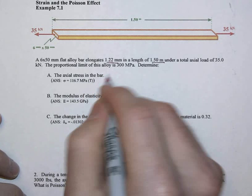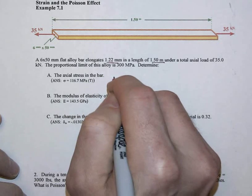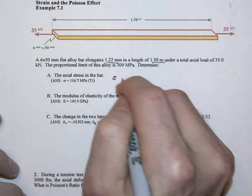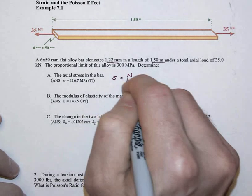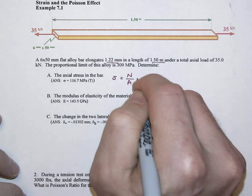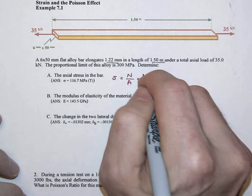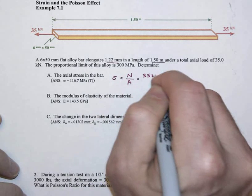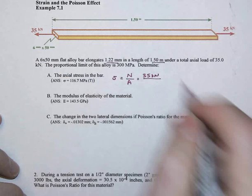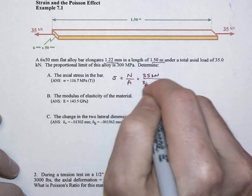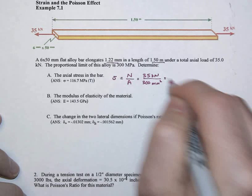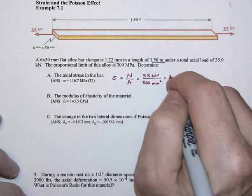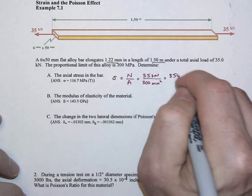So just as a quick review, remember that the axial stress is just one special example of a normal stress, given in this case with the axial force divided by the cross-sectional area, or 35 kilonewtons over the 6 by 50, so that's 300 square millimeters. And remember one of the keys here in the SI units was that if we got this into units of newtons over square millimeters, that is the same as megapascals.